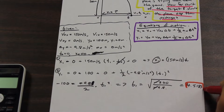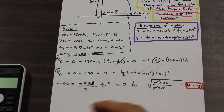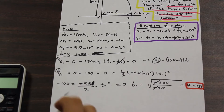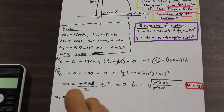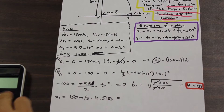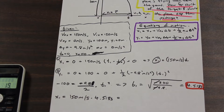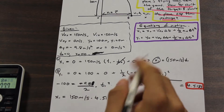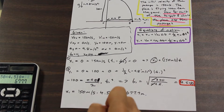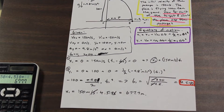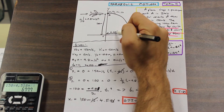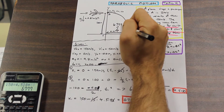Now we take T1 and plug it into Equation 1: X1 = 150 meters per second times 4.518 seconds. That gives us X1 = 677.7 meters. So this distance — how far short of the target the plane should drop the package — is 677.7 meters.